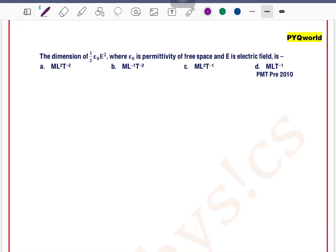The dimension of 1 by 2 epsilon 0 e square, where epsilon 0 is permittivity of free space and e is electric field is...